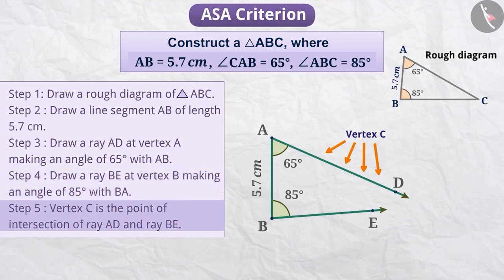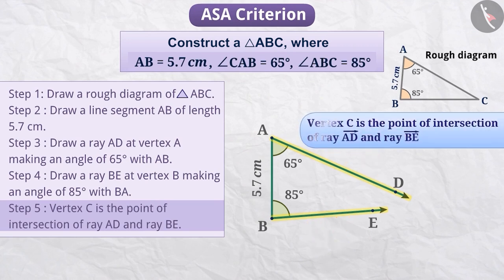Step 5. As per the previous steps, the vertex C has to lie on both ray AD and ray BE. Which means, vertex C is the point of intersection of ray AD and ray BE. But as you can see, both rays are not intersecting with each other. Can you tell what we can do? Think for a while.